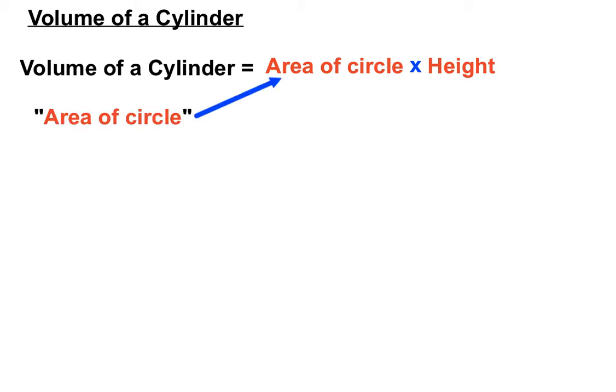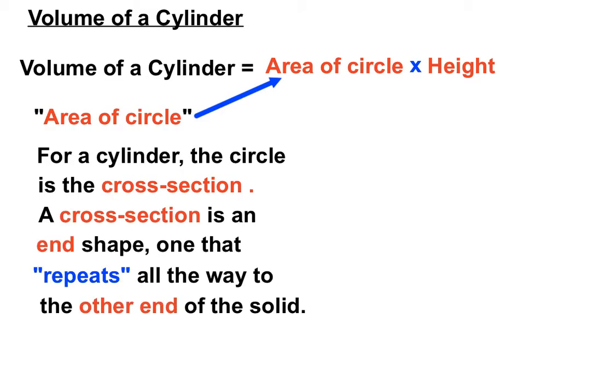We have to be careful of the definition of area of a circle here, because a cylinder is a bit like a prism in the way we calculate it. For a cylinder, the circle is like the cross-sectional area, and a cross-sectional shape is one that repeats all the way to the other end of the solid.